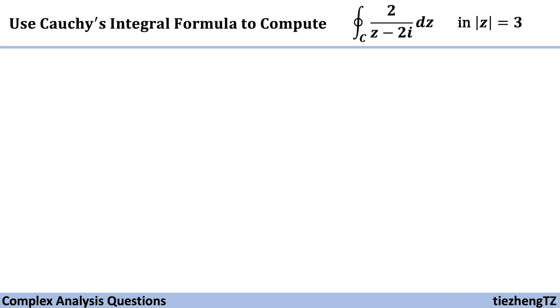This question is to use Cauchy's integral formula to calculate this integral, 2 over z minus 2i dz, in this given domain where z modulus equals 3.